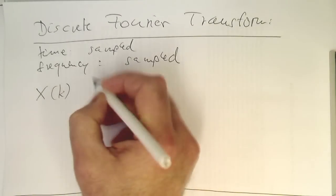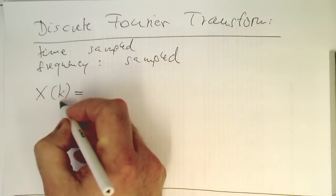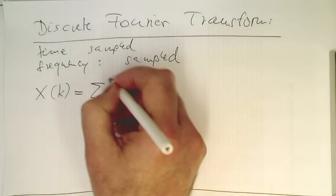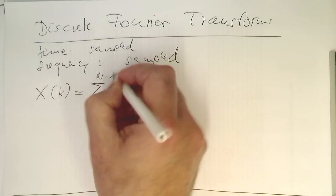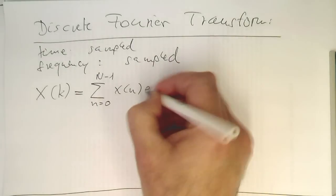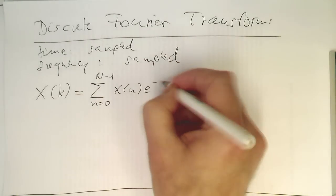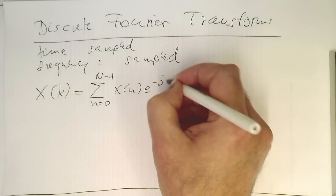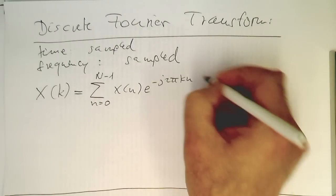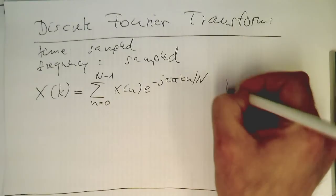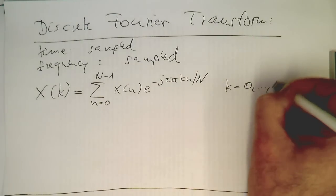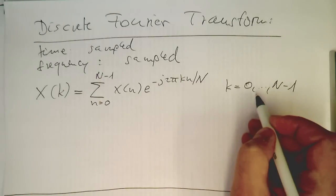The Fourier transform is now X(k), so we've got an index for frequency here. This is running from n equals 0 to N minus 1, x(n), and then e^(-j2πkn/N), and k is running from 0 to N minus 1. So we've got N points here.